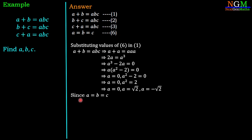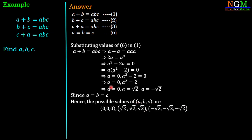Since equation 6 states A equals B equals C, the possible values for A, B, C are: first possibility — (0, 0, 0); second possibility — (√2, √2, √2); and third possibility — (−√2, −√2, −√2). So from the three equations we have three possible solution sets for A, B, and C.